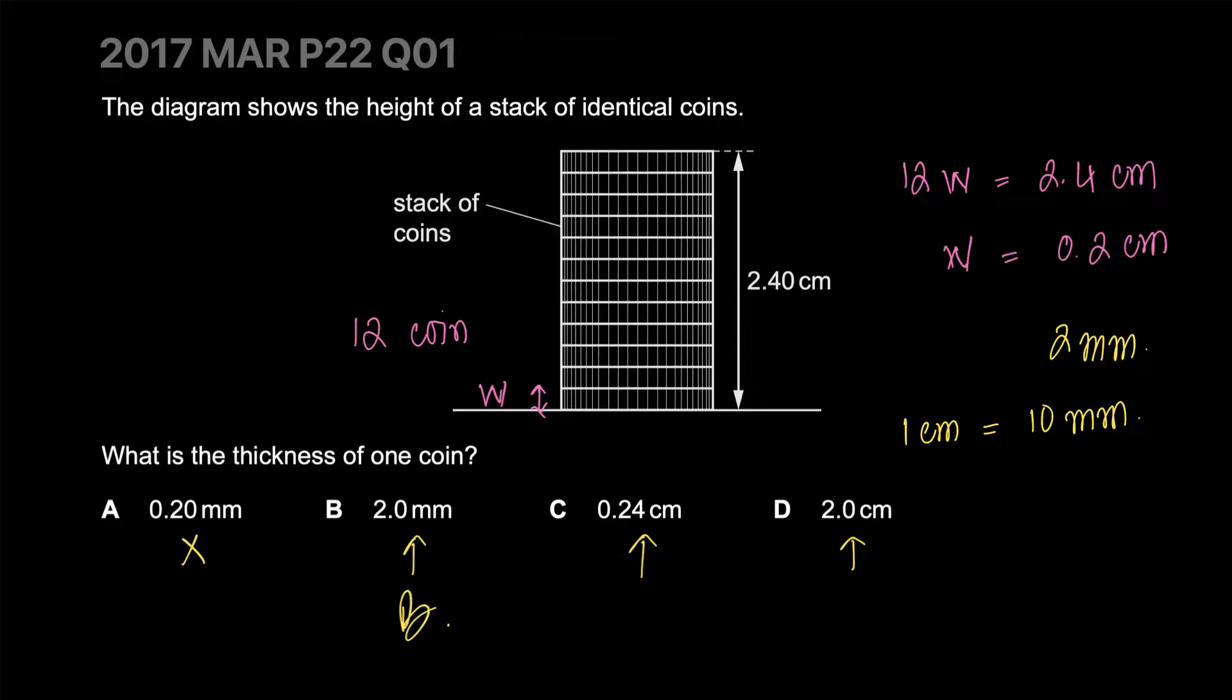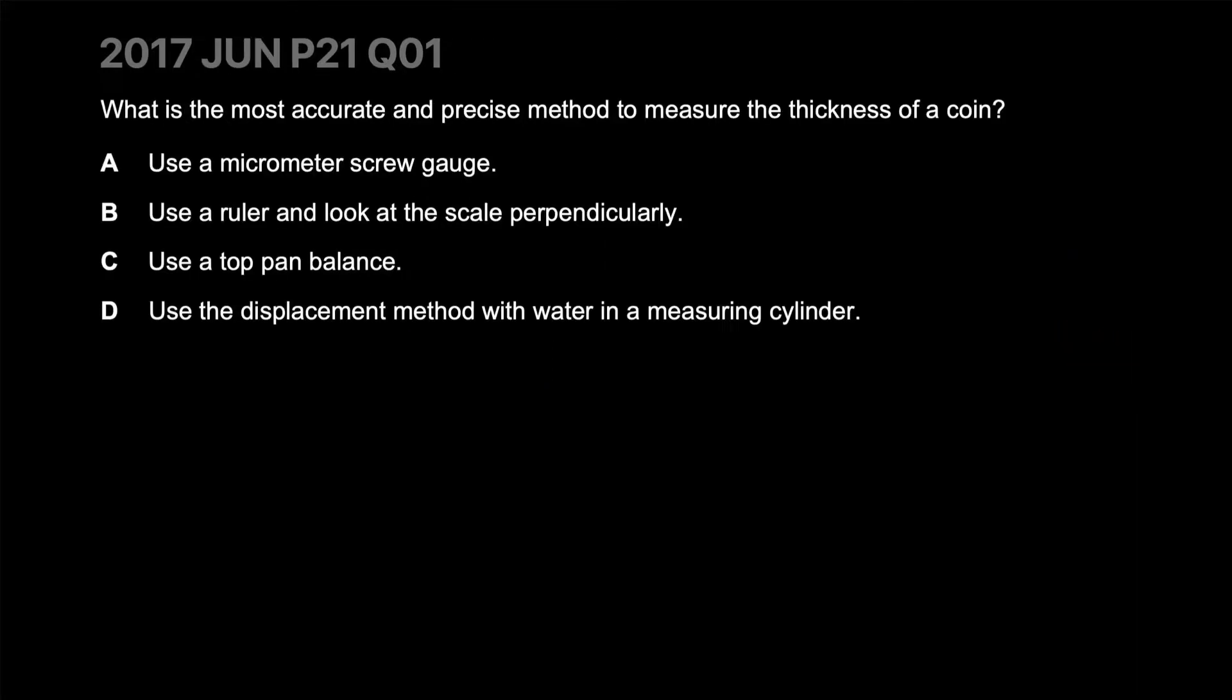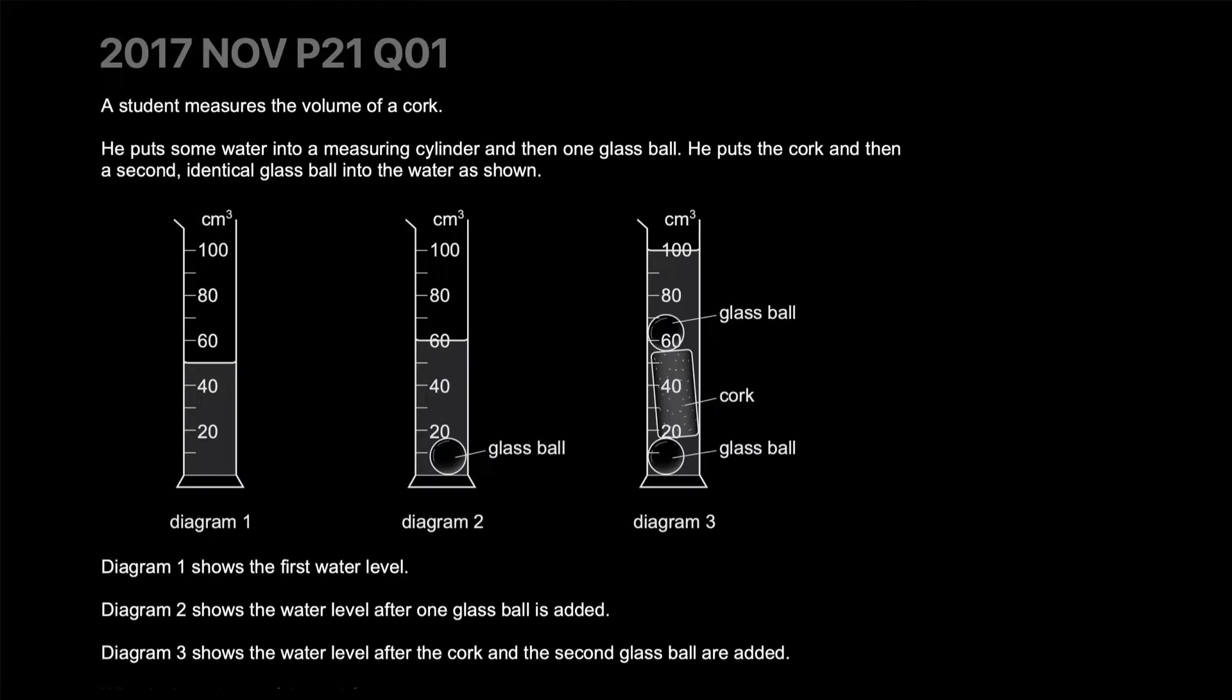What is the most accurate and precise method to measure the thickness of a coin? Use a micrometer screw gauge - yes, we just talked about this. You could use a ruler and look at the scale perpendicularly, but you can only guesstimate because the ruler is just not accurate enough. Our correct answer is A.